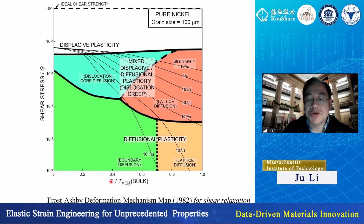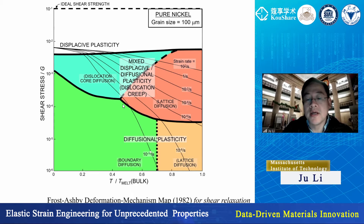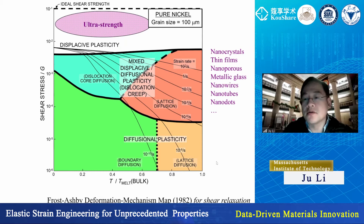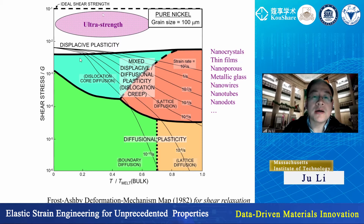As you go to higher temperature — temperature normalized by the melting temperature — you have much stronger strain rate sensitivity. The strain rate ranges anywhere from 10⁻¹⁰ per second to 10¹² per second, 12 orders of magnitude, and we look at the flow stress. There are different deformation regimes: diffusion plasticity, power law creep. This is the traditional deformation mechanism map for coarse-grained nickel. What is new in the last 30 years is nanocrystals, thin films, metallic glass, nanowires, and nanotubes, which all manifest strength way beyond traditional coarse-grained materials.